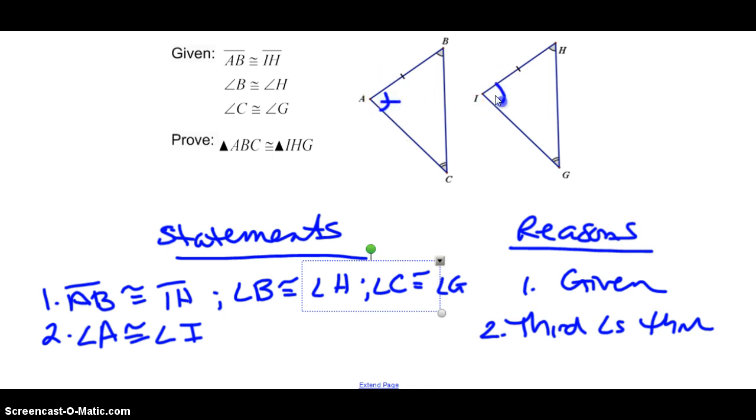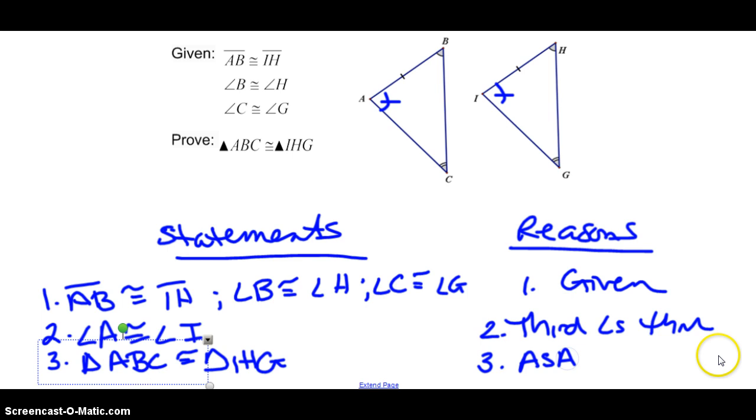So we can mark that. Statement three—oh, then we're done I guess. So triangle ABC is congruent to triangle IHG. And this is by angle-side-angle congruence.